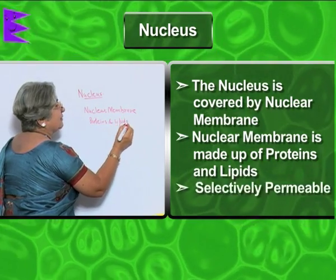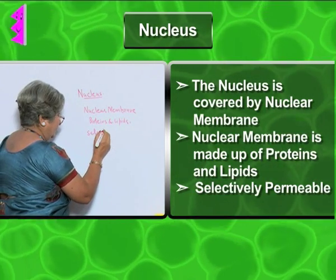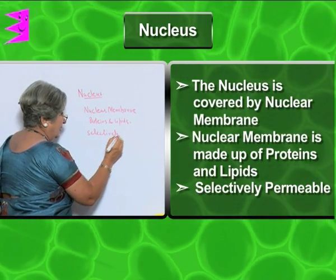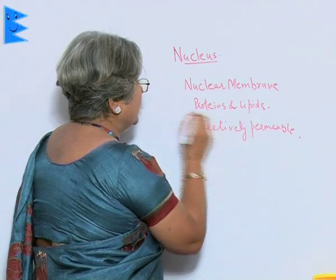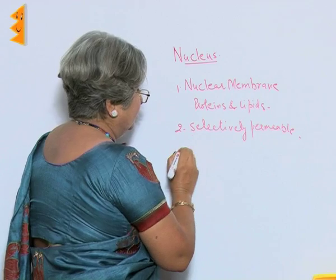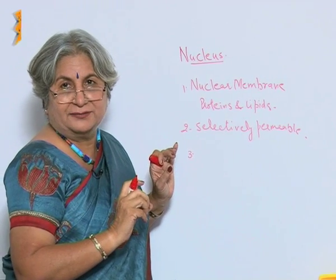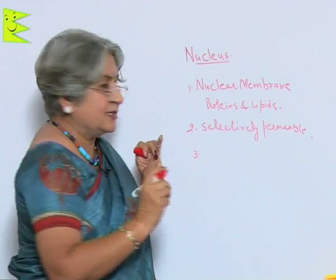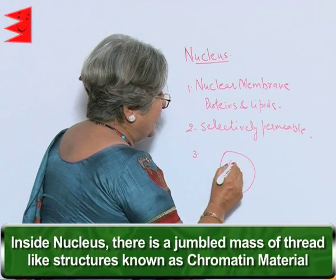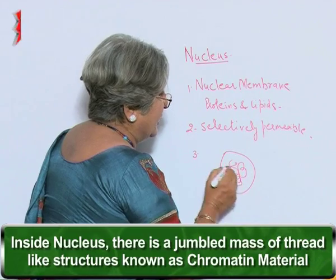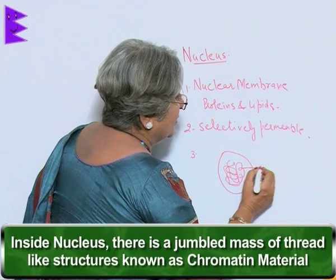This nuclear membrane is also selectively permeable. It is not as if the nucleus is just a bubble — it has a proper structure inside. Inside the nucleus, we find there is a jumbled mass of threads. This is called chromatin material.